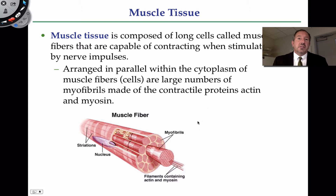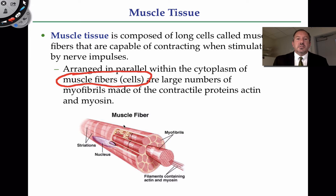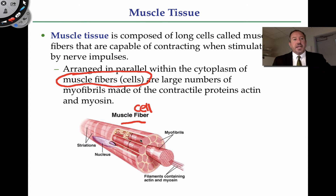Let me introduce you to a muscle cell. A muscle cell is really unusual and pretty interesting. First, a muscle cell is called a muscle fiber. I know that can be considered confusing, because normally when you think of fibers you think of strings of protein, but a muscle cell is considered to be a muscle fiber. You can see the cell membrane right here, and one thing you'll notice about a muscle cell is that it's extremely elongated.